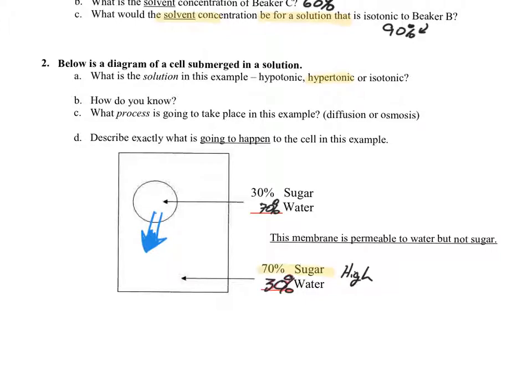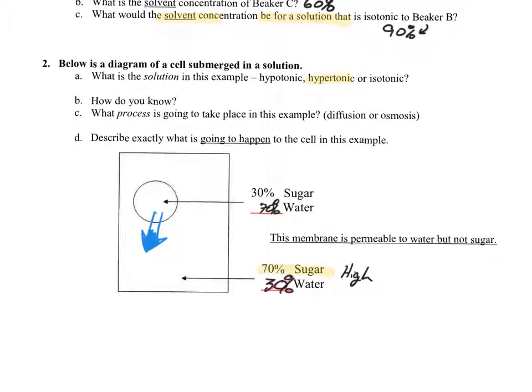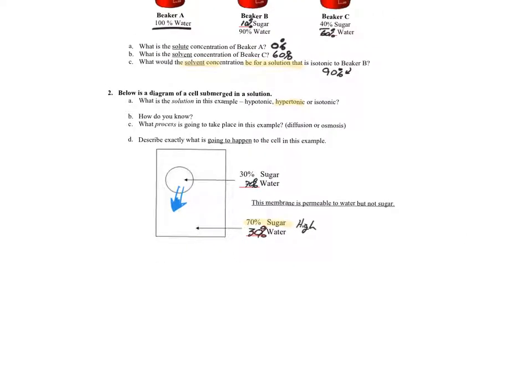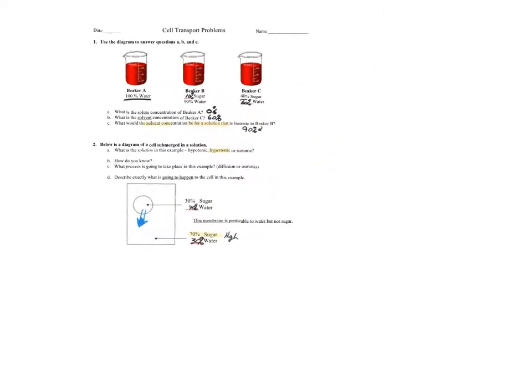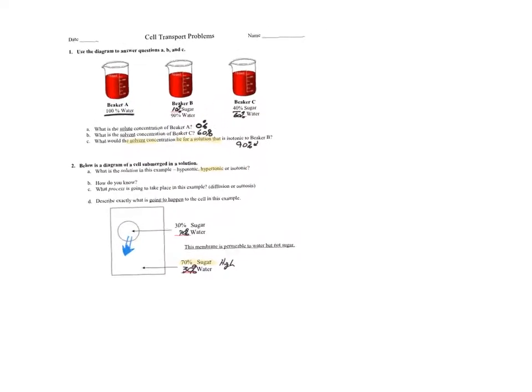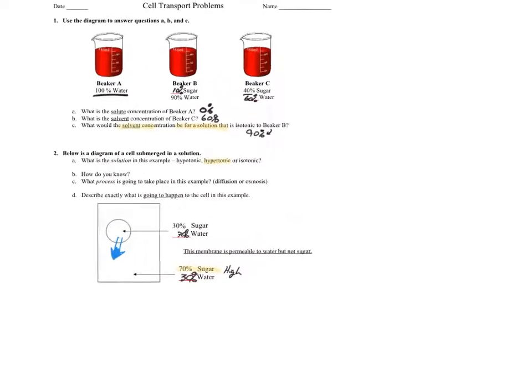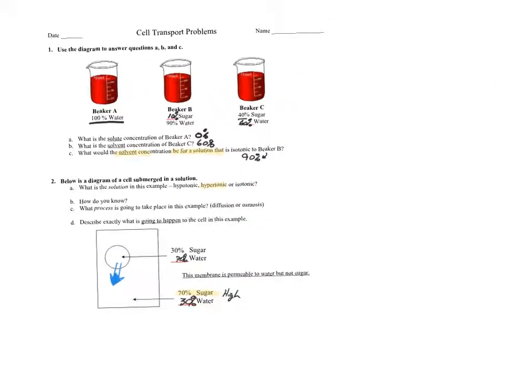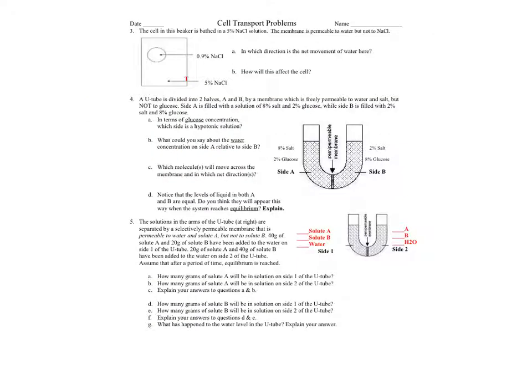What's ultimately going to happen to the cell? Water's going to move out. The cell will shrivel or shrink — and we call it plasmolysis, if it goes all the way to death.